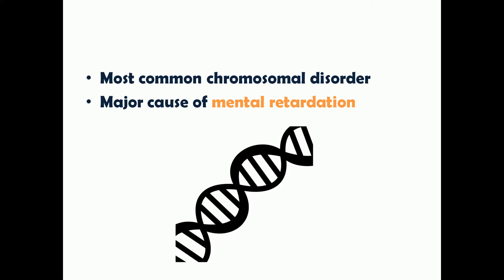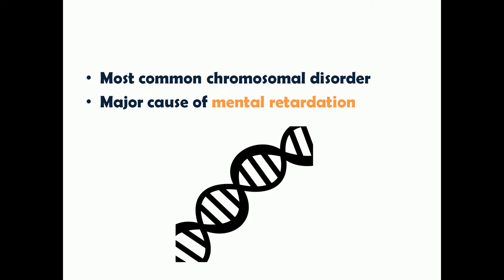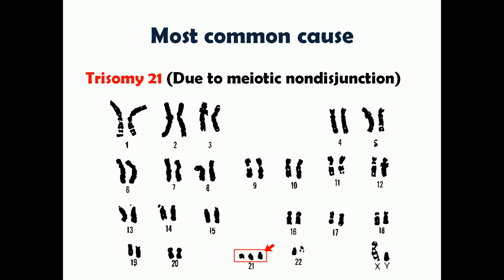Down syndrome is one of the most common chromosomal disorders known to man, and it is a major cause of mental retardation. The most common genetic cause of Down syndrome is trisomy 21, which is caused by meiotic non-disjunction.